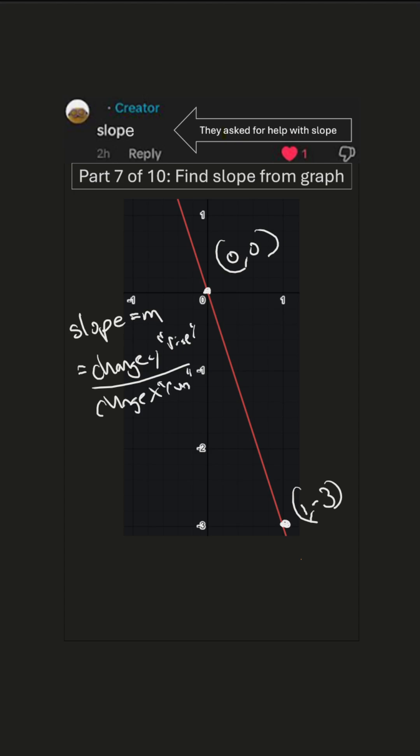So we have for the change in y, we have negative 3 minus 0, so negative 3 minus 0, over 1 minus 0. What does that equal? That's negative 3 over 1, which equals negative 3. So that's the slope.